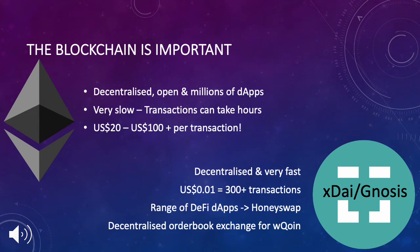Why is it important which blockchain you use? Each blockchain has different features, benefits and drawbacks. For example, Ethereum is decentralized and open, with millions of dApps and many decentralized exchanges. However, it is slow and transaction fees are very high. Using the right blockchain will ensure you retain the best features while at the same time eliminating the bad ones.